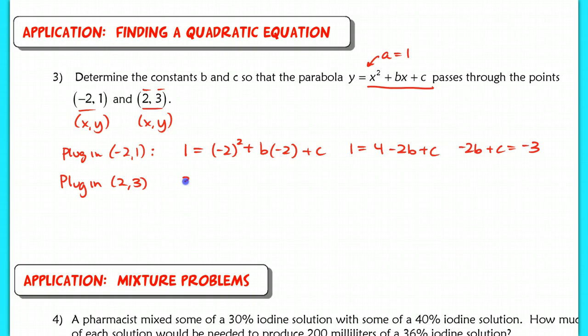Now I'm going to do the same thing and get a second equation here by plugging in the point (2, 3). When I plug the point (2, 3) in, now I have 3 equals 2 squared plus b times 2 plus c. So I get 3 equals 4 plus 2b plus c. And if I move over this constant here, I end up with 2b plus c equals negative 1.